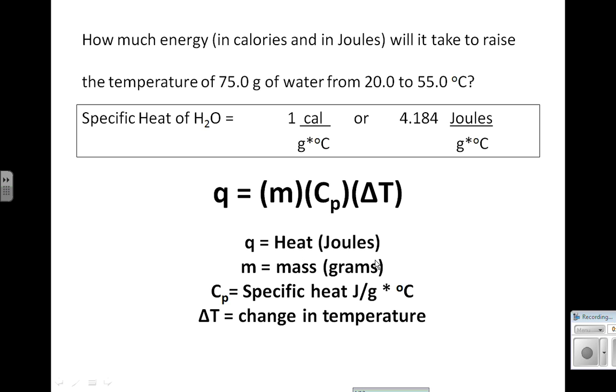M is mass, measured in grams. Cp is specific heat, which is specific for whatever substance we're looking at. In this problem we are looking at water, and the specific heat for water is either 1 calorie per gram degree Celsius or 4.184 joules per gram degree Celsius.